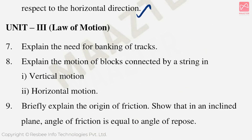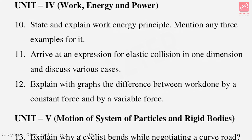Unit 3 Law of Motion — important five-mark questions: Explain the need for banking of tracks. Explain the motion of blocks connected by a string in vertical and horizontal motion. Briefly explain the origin of friction. Show that on an inclined plane, the angle of friction is equal to the angle of repose. Unit 4 Work Energy and Power: State and explain the work-energy principle and mention any three examples. Arrive at the expression for elastic collision in one dimension and discuss various cases. Explain with graphs the difference between work done by a constant force and by a variable force.